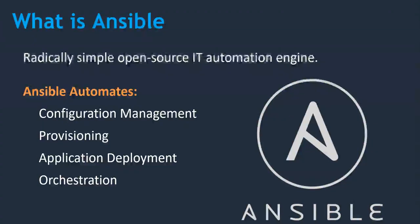Next is orchestration. Orchestration means executing tasks in a sequential format. For example, to enable monitoring you first need to update the system, then install the required packages, then restart the system. These steps must follow in sequence — if you change the order it may not work as expected. This is what we call orchestration, and Ansible can handle all of this.